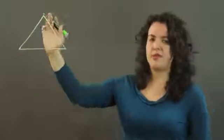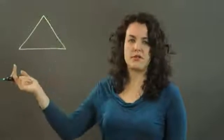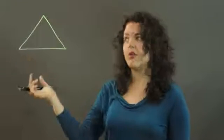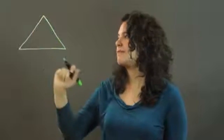Let's try the vertex at the top here. The vertex is any of the corners on a triangle, any of the angles — that's the vertex. There's one, there's one.